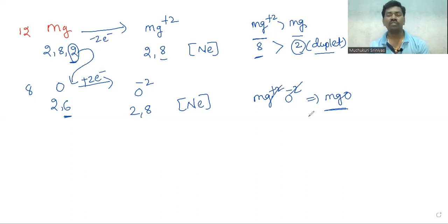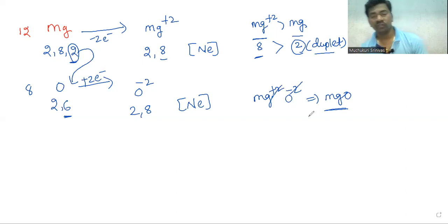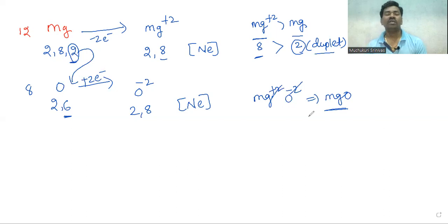So, ionic bond is formed whenever the valence shell electrons from one atom are completely transferred to another atom. This is a chemical bond. If you like the video, please hit the like button, share this video with your friends, and subscribe to our channel for more latest updates. Thank you for watching.